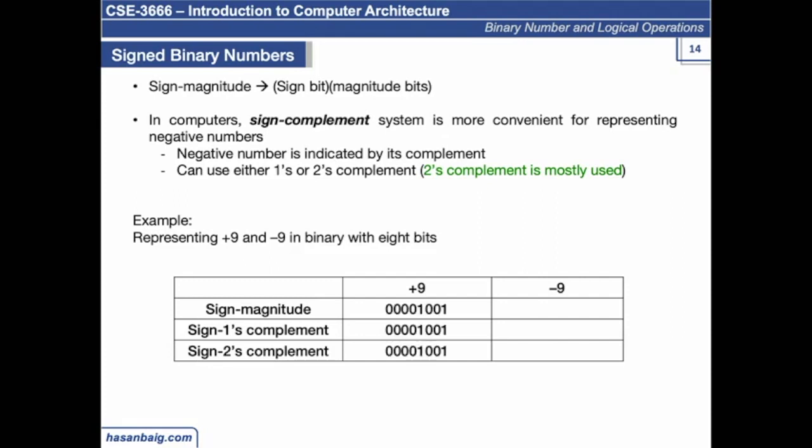So this is how you represent plus 9 in sign magnitude. This represents the positive 9. Even if it is sign one's complement, the value is again same. In sign two's complement, the value is still the same because it's just being plus 9.